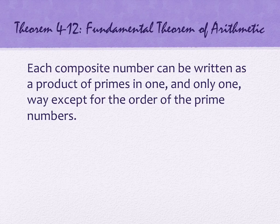The fundamental theorem of arithmetic says each composite number can be written as a product of primes in one and only one way, except you could order the primes in a different way. So 6 can be written as 3 times 2 or 2 times 3. We're going to call that the same thing. But you can't do 6 as any other primes besides 2 and 3.